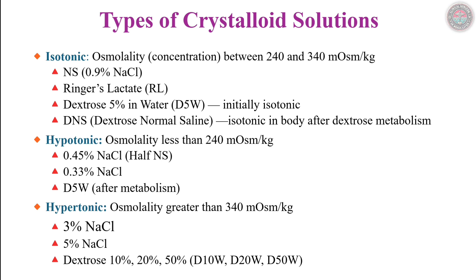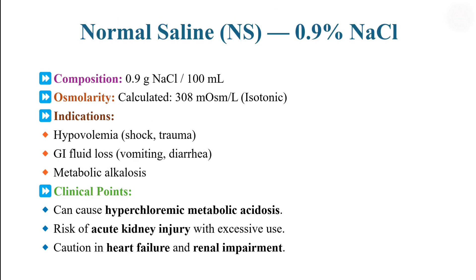Normal saline, or 0.9% sodium chloride, is isotonic with an osmolarity of 308 mOsm/kg. It is first line for hypovolemia, hemorrhagic shock, and metabolic alkalosis. However, excessive use can cause hyperchloremic metabolic acidosis and acute kidney injury. Exercise caution in heart failure or renal impairment, where sodium and fluid retention may exacerbate conditions.